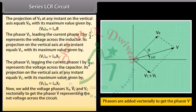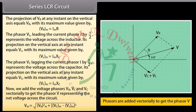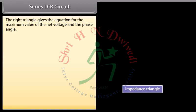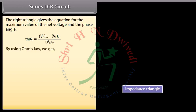We add the voltage phasors VR, VL and VC vectorially to get the phasor V representing the net voltage across the circuit. V_max equals the square root of VR_max² + (VC_max − VL_max)². Tan φ equals (VC_max − VL_max) / VR_max. By using Ohm's law, Vm = Im × √(R² + (XC − XL)²).